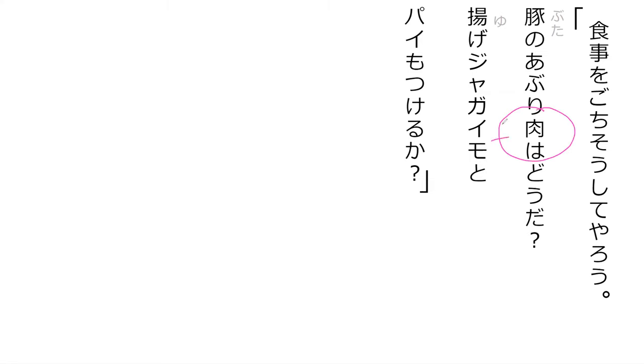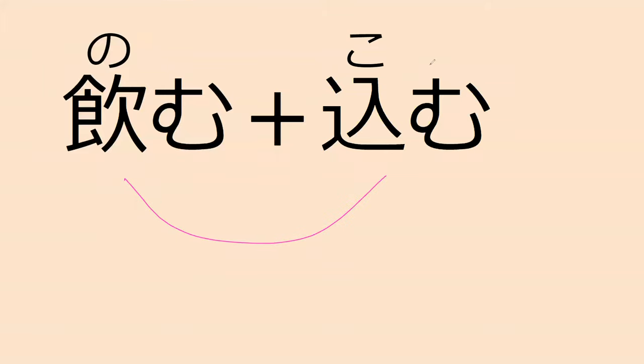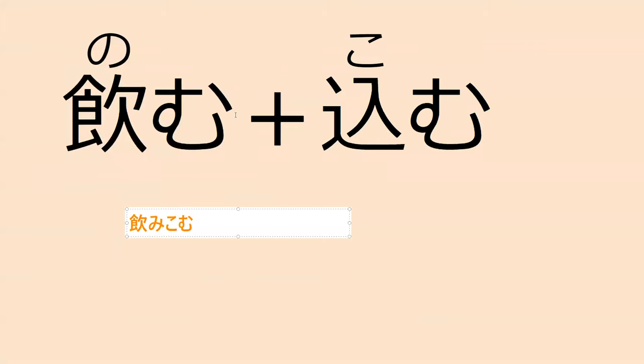So we lift off with the old man offering to feed the main character. Do you remember how this kanji is read? Niku — perfect. Our next word is nomu. Do you know what nomu means? To drink — yes. So now you have nomi and komu. How could we combine these together to make one word? We use the root: nomi-komu.